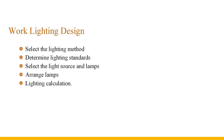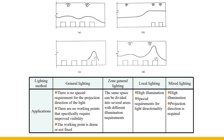Let's first look at the lighting methods. This diagram represents four types of lighting. Figure A is general lighting. It belongs to uniform lighting and does not consider special local needs. It is suitable for work points that have no special requirements for the projection direction of light, no special need to improve visibility on the work surface, and places where work points are very dense and not fixed. However, it is not economical for tall rooms with high illumination requirements.